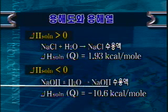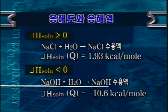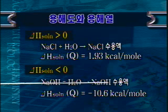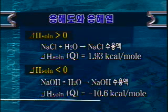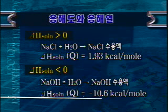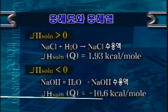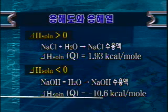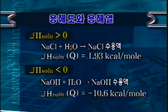다음으로 가성소다를 물에 용해시켜 가성소다 수용액을 만드는 경우입니다. 이 경우 엔탈피 변화량은 음수입니다. 소금의 경우와 반대로 냉각을 시켜야 물에 잘 용해될 수가 있습니다. 다음에는 어떤 용매를 사용하는가를 결정하는 특성을 살펴보도록 하겠습니다.